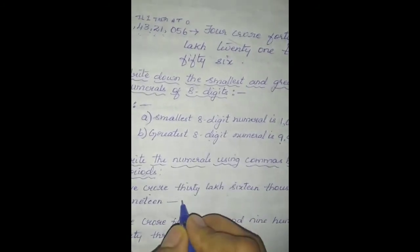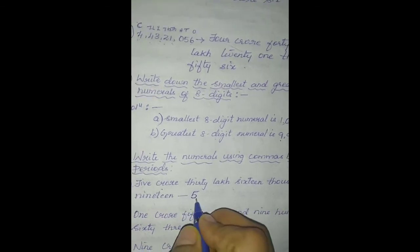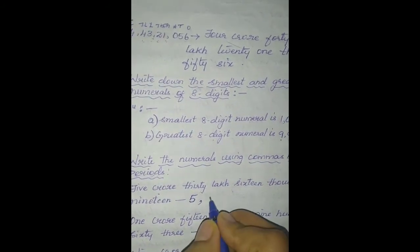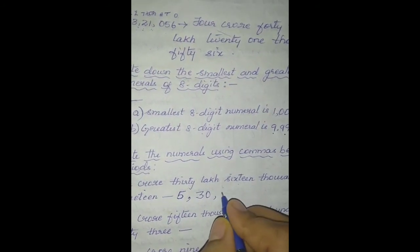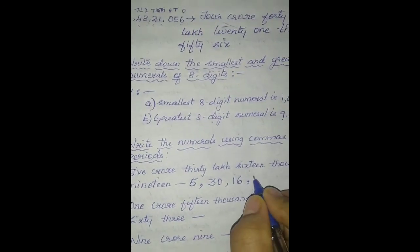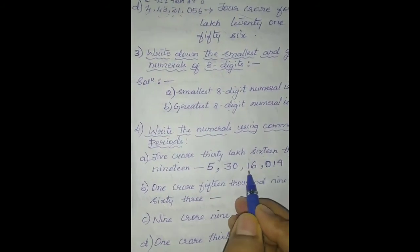How will you write this numeral? 5 crore, 30 lakhs, 16,000, 19. It is an 8-digit number — keep that in mind. 30 lakhs means 30 in the lakhs columns; there is no 100s place, so we write 0 and 19. Count the digits: 1, 2, 3, 4, 5, 6, 7, 8 — yes, it is an 8-digit number. So: 5,30,16,019.